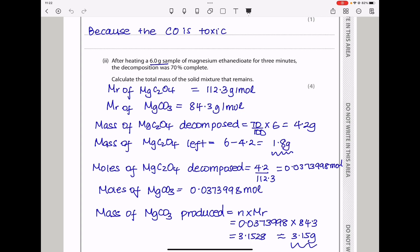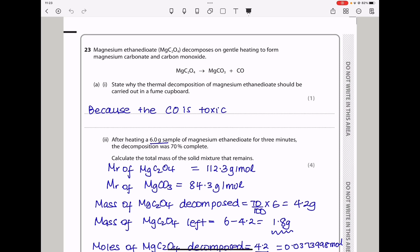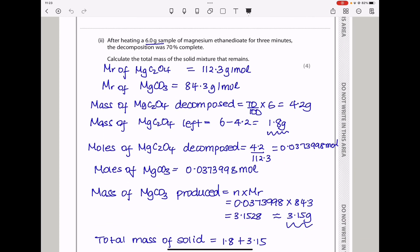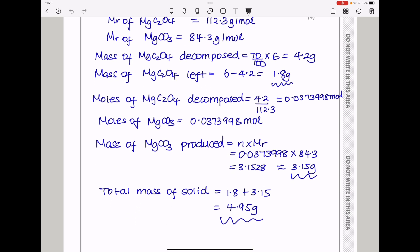Now, I'm going to use the mass of what has decomposed to find the mass of magnesium carbonate that will be produced. The moles of magnesium ethane-di-oate decomposed will be the mass divided by the molar mass, which gave me these moles. If we look back at the reaction equation, the ratio is 1 to 1, so the moles of these reacted are equal to the moles of that produced. So meaning, the moles of magnesium carbonate produced are equal to those moles.